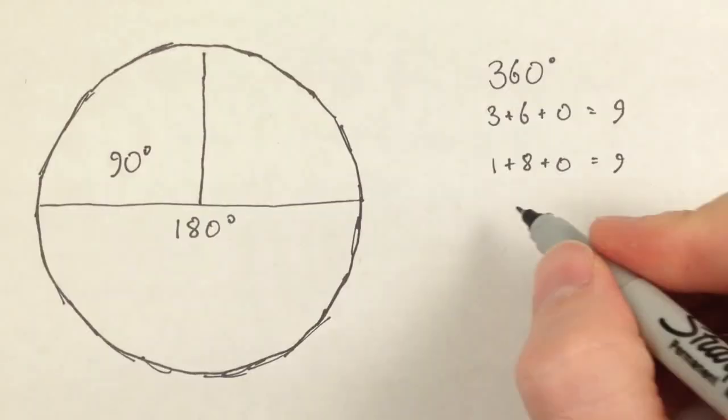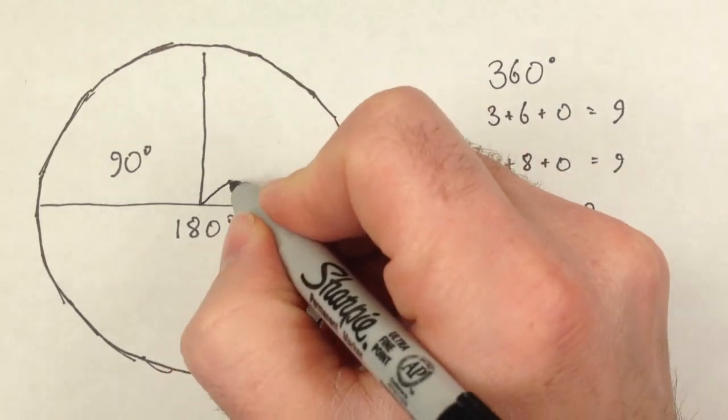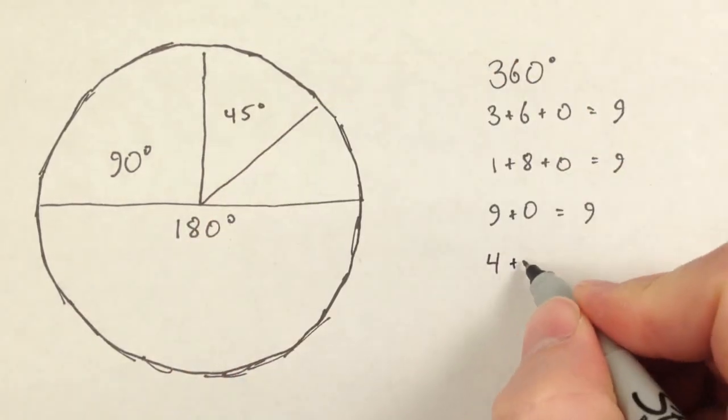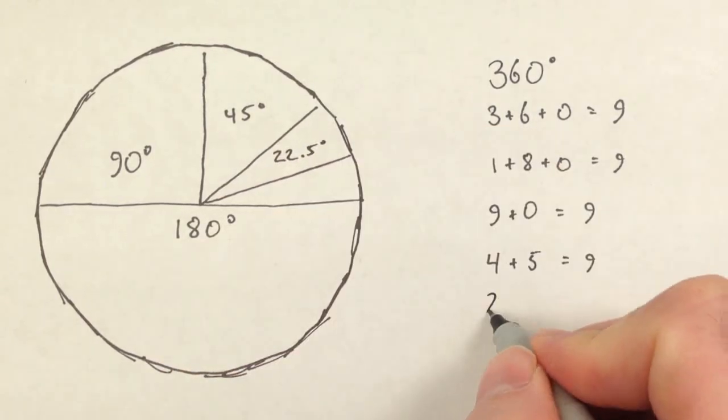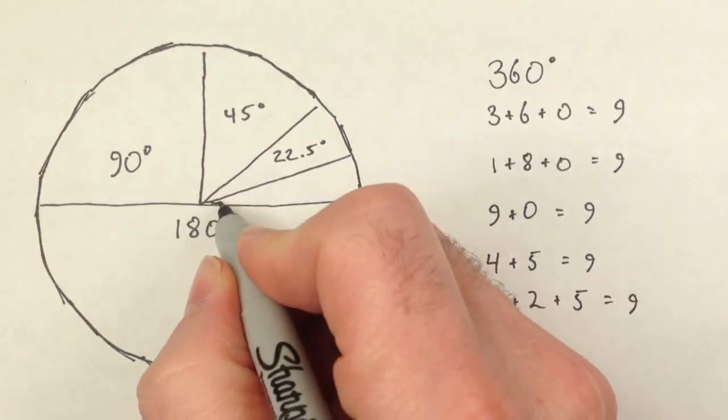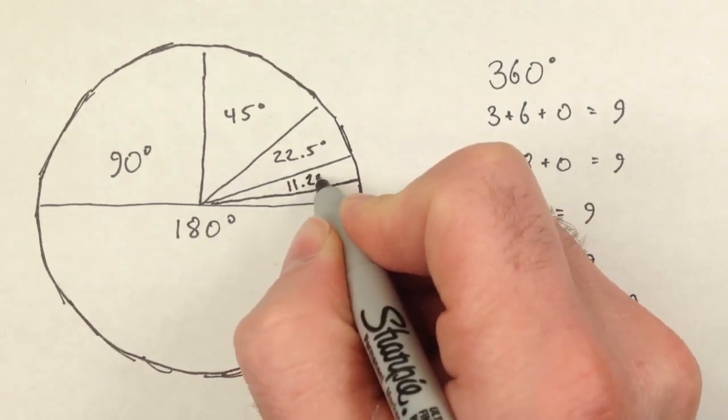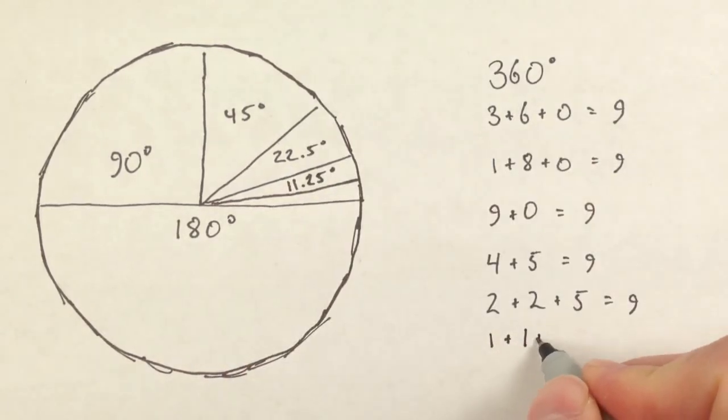Continue to cut the angles in half and the resulting angle's digital roots will always be 9. This perpetual appearance of the number 9 reinforces its significance as an especially meaningful number hidden within the patterns of nature. But why is it there and how does this work?